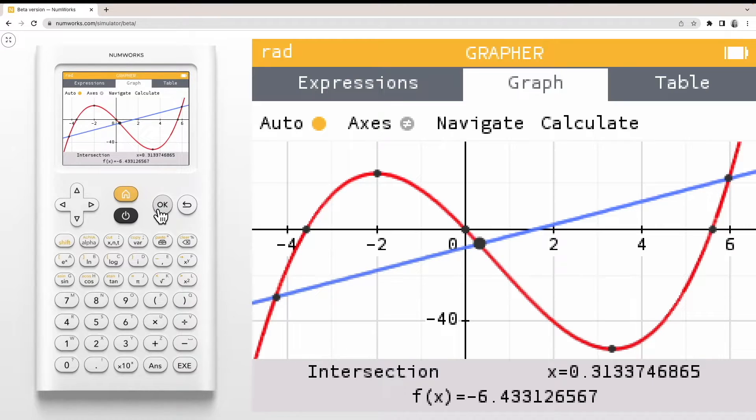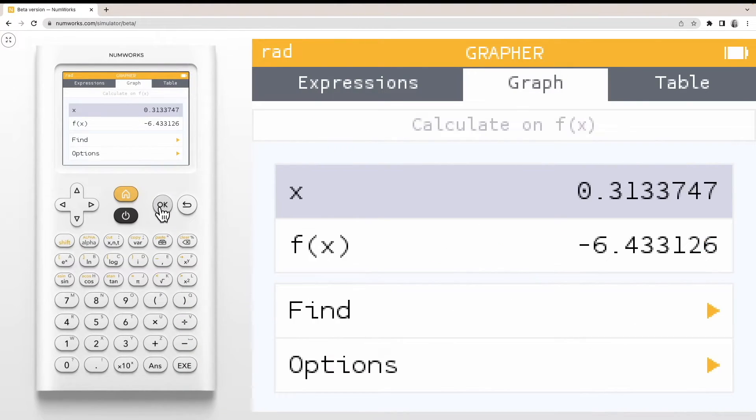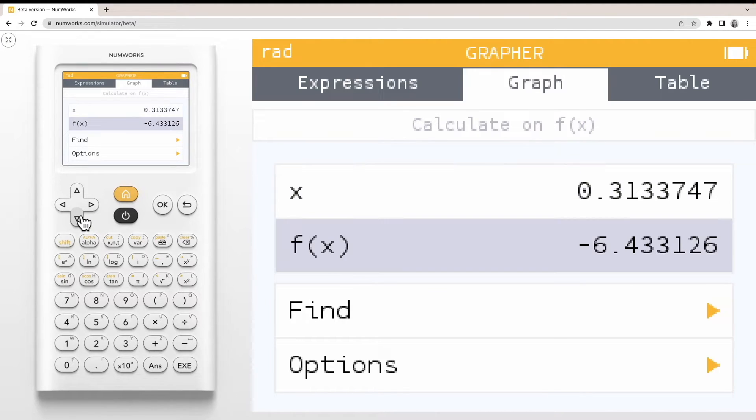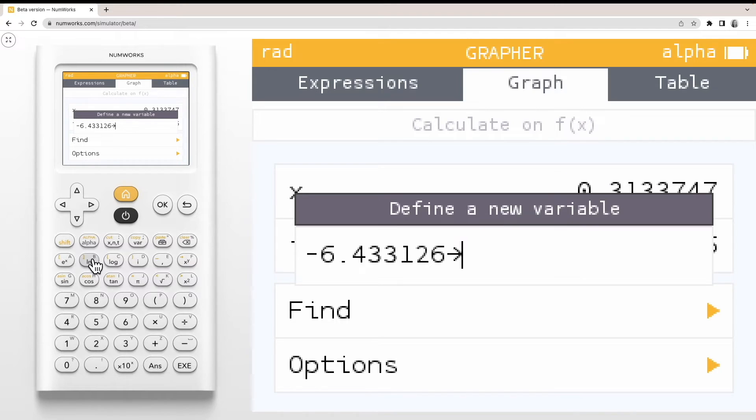To store the y value of a selected point, first press ok on the selected point. Navigate down to the f of x or y value, then press shift x to the y key. Again, choose your desired variable using your alpha key and press ok to confirm.